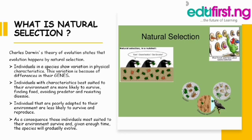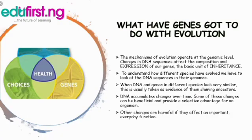Individuals with characteristics best suited to their environments are more likely to survive in finding food, avoiding predators, and resisting diseases. Individuals that are poorly adapted to their environments are less likely to survive and reproduce. As a consequence, those individuals most suited to their environment survive, and when given enough time, the species will gradually evolve.